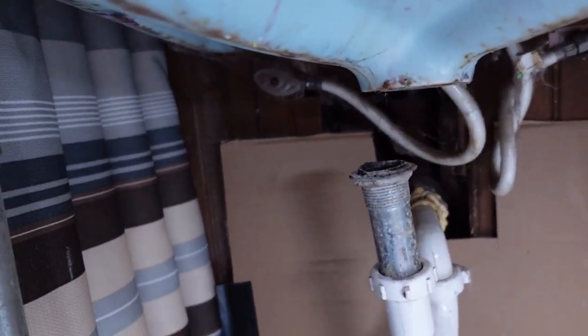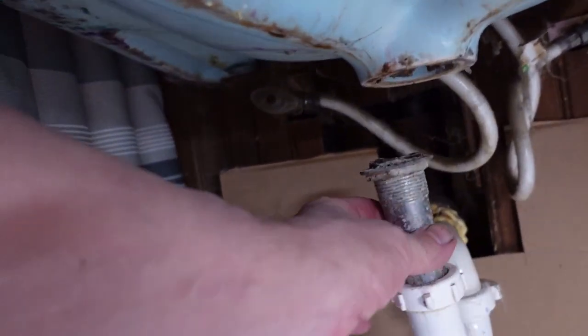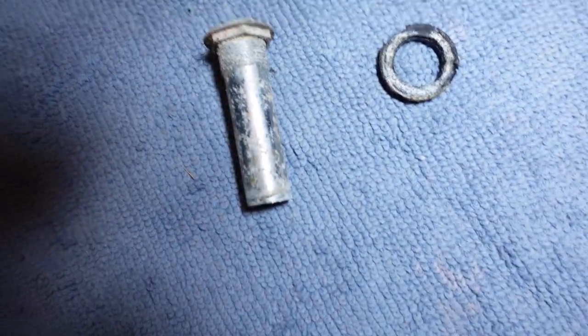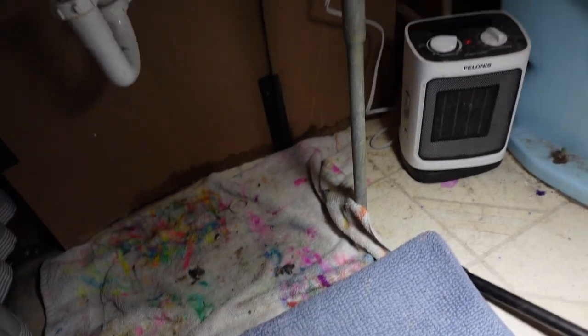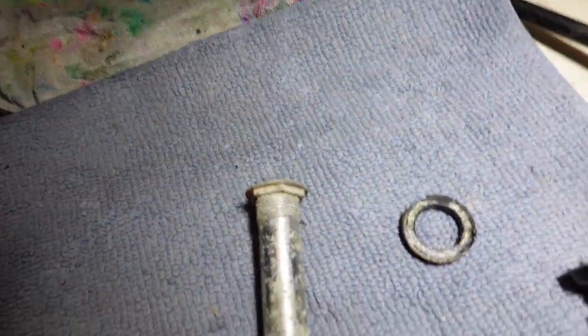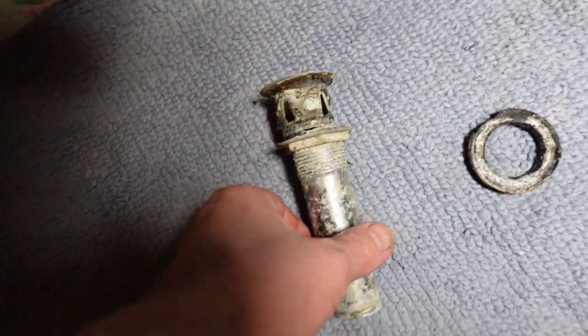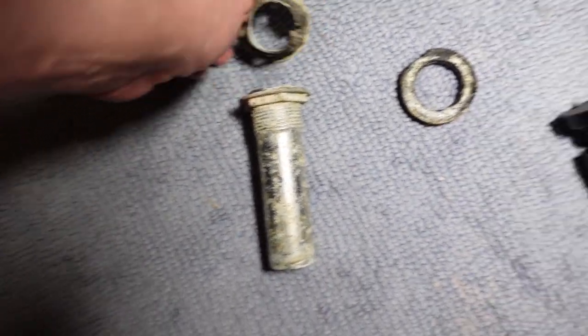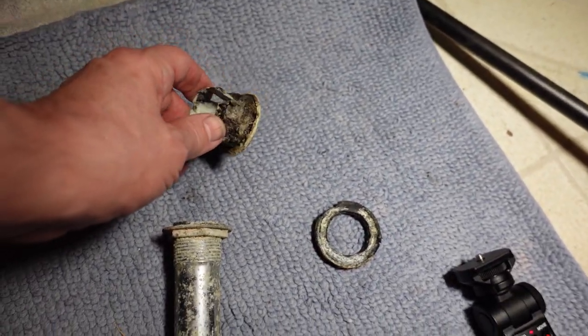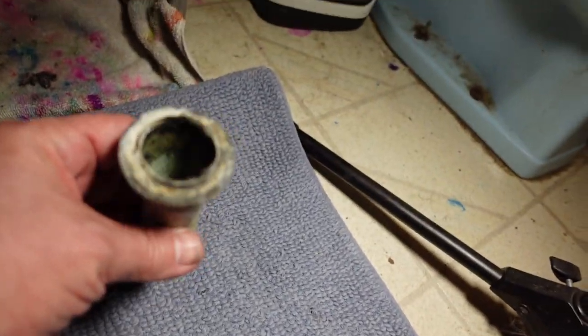And sure enough we found this tailpiece. It's completely broken off. The rest of it is right there. This is supposed to be one piece. It finally corroded through the metal. I'm sure that this is probably 40 years old or more. This bathroom hasn't been updated in a very long time.